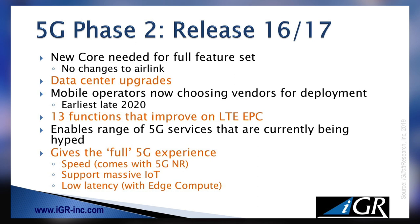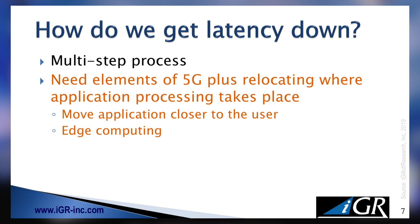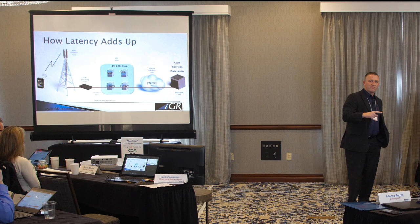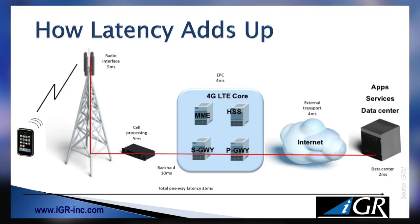Think of it this way: Phase 1 is the radio, the antenna, the tower, the baseband — the front-end stuff. Phase 2 is really more of the back-end stuff. So how do we get latency down? It really comes down to locating where the processing takes place. I said on the panel it was about 70 milliseconds round trip for LTE — here's how that breaks up.